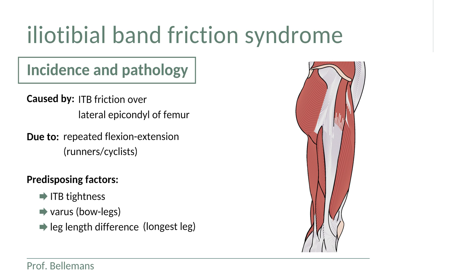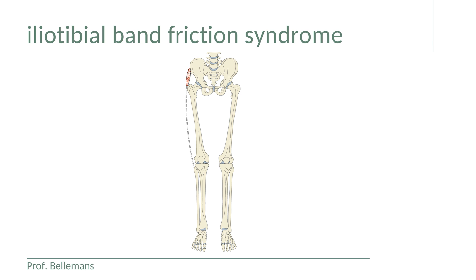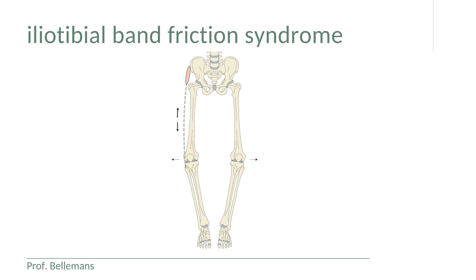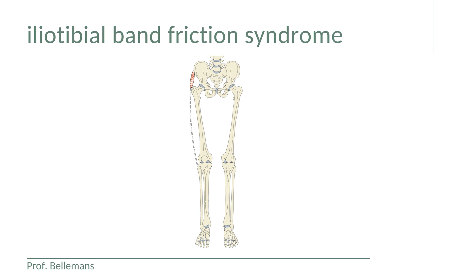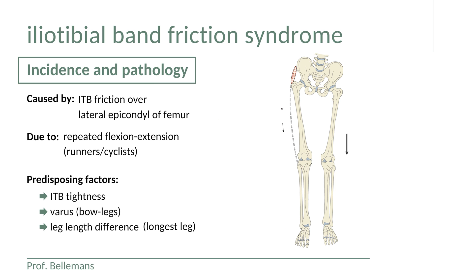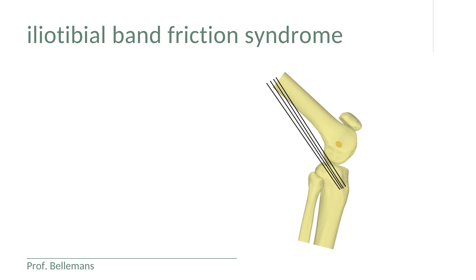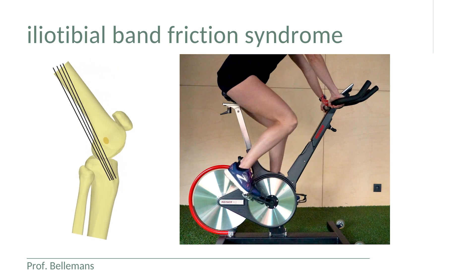In athletes with ITB friction syndrome you need to correct contributing factors where possible. One of the most important is varus deformity, or bow legs — with a varus leg, tension in the ITB is high compared to a valgus or knock knee. Leg length difference is also a contributing factor, with the longer leg predisposed to ITB friction syndrome due to pelvic obliquity increasing ITB tension. The friction occurs over the lateral epicondyle during each flexion-extension cycle.